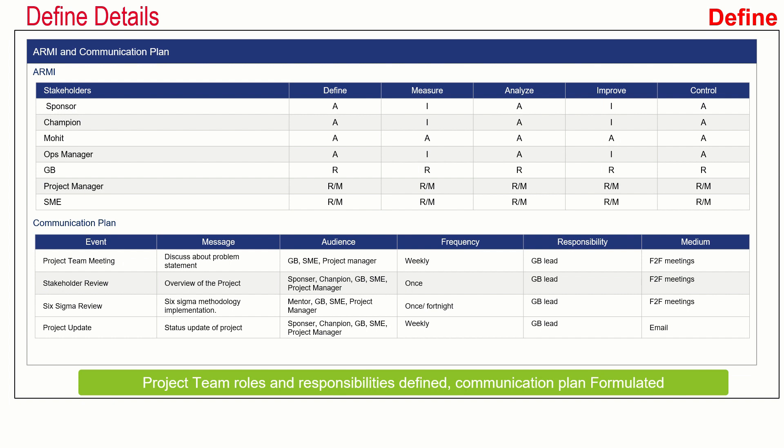The team then created an ARMI chart, defining roles and responsibilities for the sponsor, champion, quality black belt, ops manager, green belt, project manager, and SMEs. A stands for approver — these people approve the phases. I stands for informed. R stands for resource — someone with technical knowledge like an SME. And M stands for member — people who take part in the project, help with data collection, and implementation of solutions.